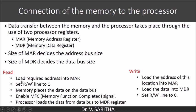To perform a read operation: load the required address into MAR — whatever data we want to read, the corresponding address is loaded into MAR. Set the read/write line to 1. The memory places the data on the data bus from the corresponding address. Then enable MFC — the memory function completed signal. Once the memory places the data onto the data bus, the MFC signal is enabled and the processor copies it into the MDR register.